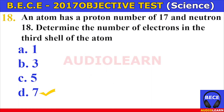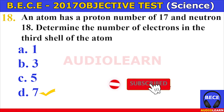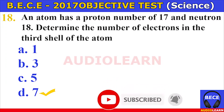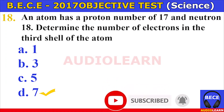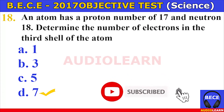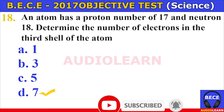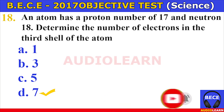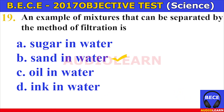Number seventeen. The mole is the SI unit of A. amount of substance, B. luminous intensity, C. temperature, D. mass of substance. The answer is A. amount of substance. Number eighteen. An atom has a proton number of 17 and neutron number 18. Determine the number of electrons in the third shell of the atom. A. 1, B. 3, C. 5, D. 7. The answer is 7.